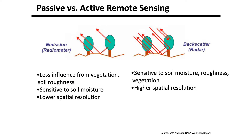In soil moisture remote sensing there are two main approaches. You have a passive approach and an active approach. The passive approach you can think of as your eyes capturing ambient light so you can see. The active approach is similar to a radar gun — it emits radiation and measures the backscatter or return. The passive instrument is a microwave radiometer measuring the thermal emission from the land surface, measuring the brightness temperature. Soil moisture is the dominant effect on that received signal in the absence of significant vegetation.